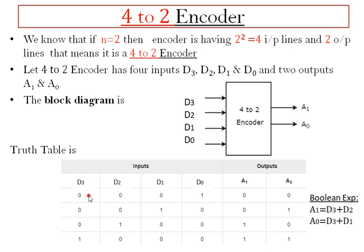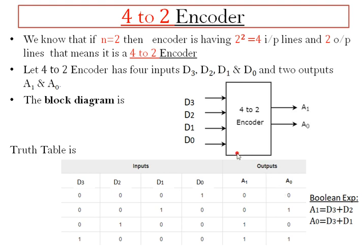When D0 is activated — meaning D0 is 1 and the rest are 0 — decimal 0 is the input for this encoder circuit. We need to represent decimal 0 using two binary values, so decimal 0 is represented as 0 0. Similarly, when D1 is activated, decimal 1 is the input, and we know 1 is represented as 0 1.